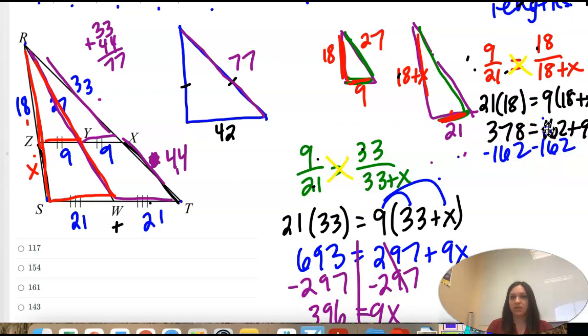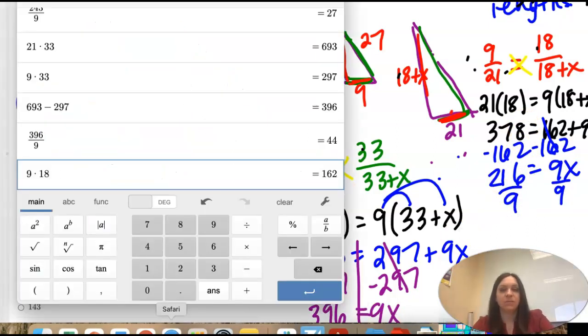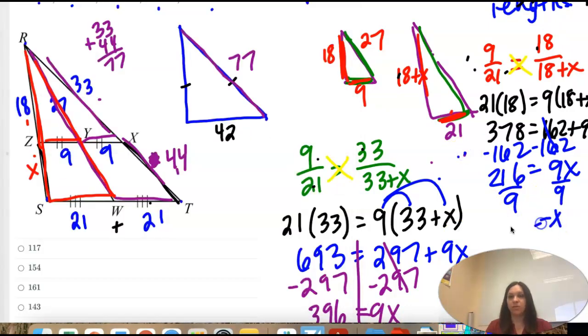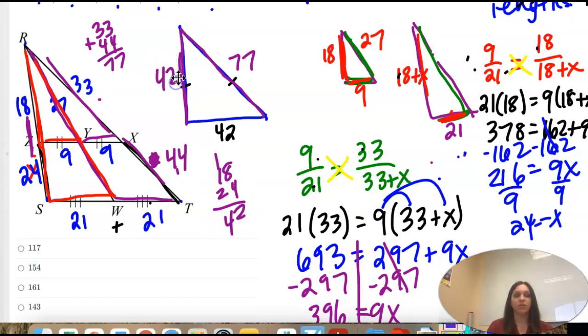Minus 162. Minus 162. That leaves us with 9X equals 216. Divide by 9. That's 24. So this is 24. When I add them together, I get 18 plus 24 is 42. So this whole side is 42 as well.